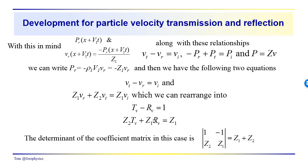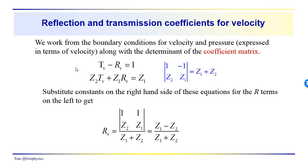The solution to this set of linear equations starts with finding the determinant of the coefficient matrix — the coefficients for each of the variables, t_v and r_v, in this set of equations. The coefficient matrix is 1, minus 1, z2, z1. That determinant is equal to z1 plus z2. So we've already determined what the determinant of the coefficient matrix is: z1 plus z2.